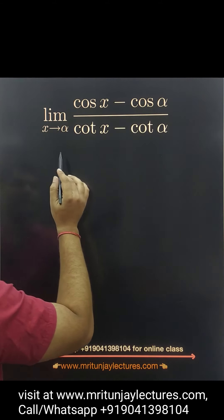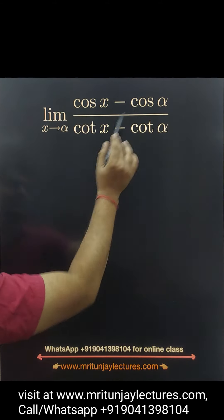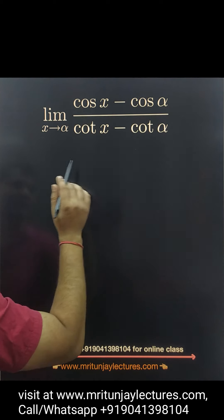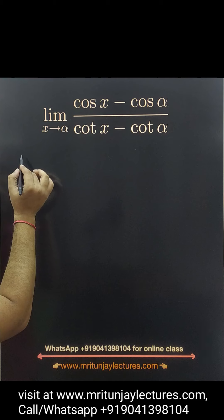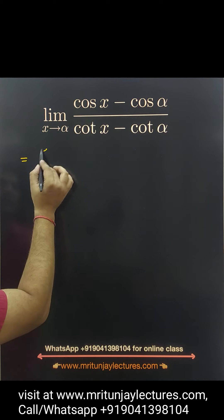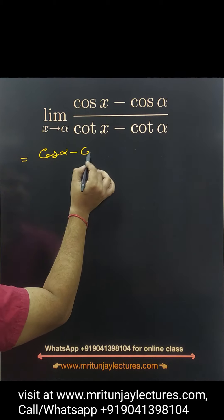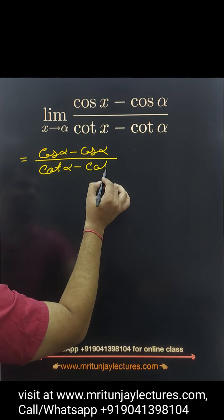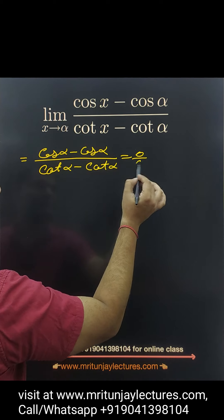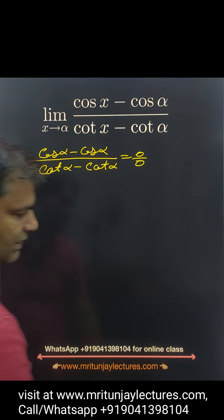X tends to alpha. Here we have cos x minus cos alpha upon cot x minus cot alpha. How can you solve this type of problem? Simply, if you put x equals alpha, then cos alpha minus cos alpha and cot alpha minus cot alpha, which means 0 by 0 form.